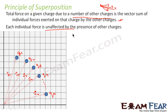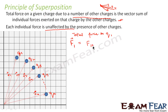Let us calculate the total force on Q1. According to the principle of superposition, the total force on Q1 will be equal to the force on Q1 due to Q2, plus force on Q1 due to Q3, and so on. That means F1 total equals F12 plus F13 plus F14, and so on till force on 1 due to the nth charge. This is what the principle of superposition states.